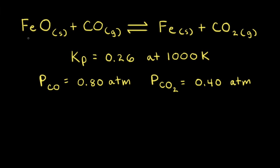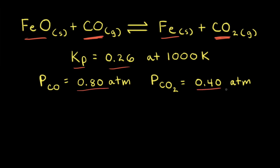For the reaction iron oxide plus carbon monoxide goes to solid iron and carbon dioxide, the equilibrium constant Kp is equal to 0.26 at 1000 Kelvin. Our goal is to find the equilibrium partial pressures of our two gases, carbon monoxide and carbon dioxide, if the initial partial pressures are 0.80 atmospheres for carbon monoxide and 0.40 atmospheres for carbon dioxide.